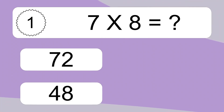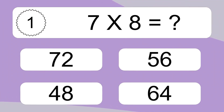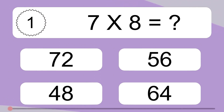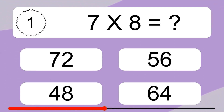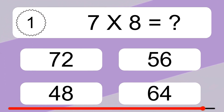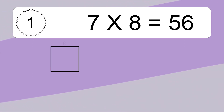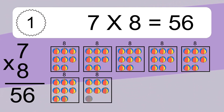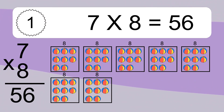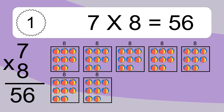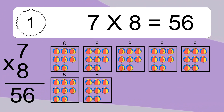7 times 8 equals what? 7 times 8 equals 56. We have 7 boxes, and each box has 8 colorful balls inside. If you count all the balls in all the boxes together, you will have 7 times 8 balls. This equals 56 balls.